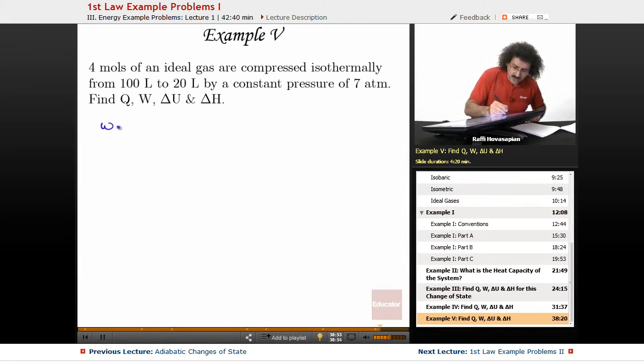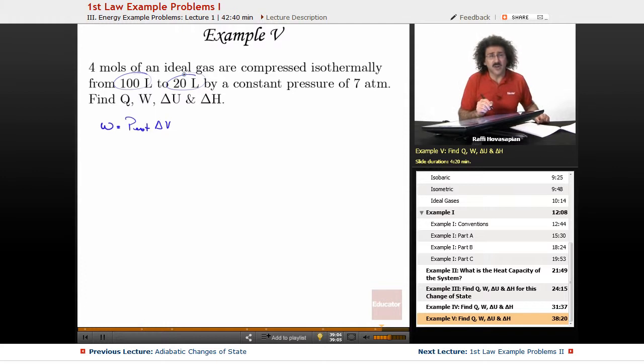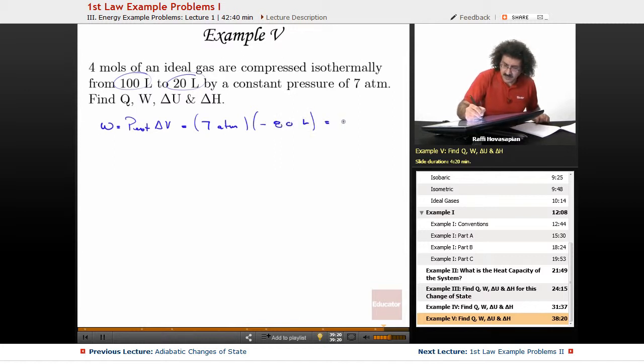Well, let's go ahead and do work first. Work is equal to the external pressure times the change in volume. They give us the change in volume. That's just 100 to 20. It's final minus initial, so it's 20 minus 100, so it's actually minus 80. So the external pressure is seven atmospheres and minus 80 liters. So we end up with minus 560 liter atmospheres.